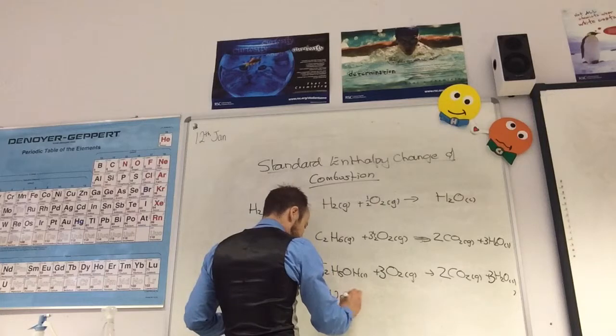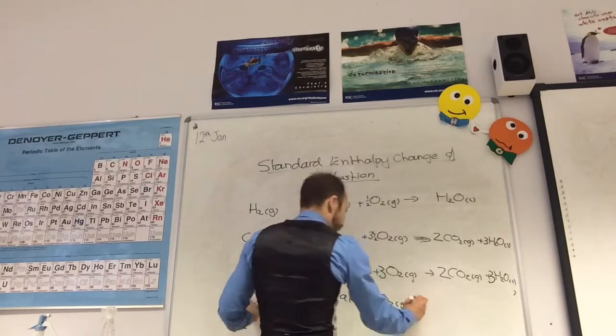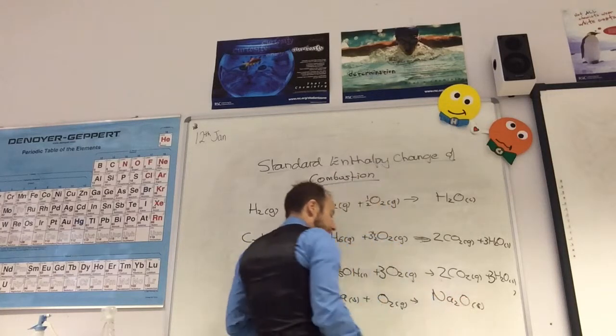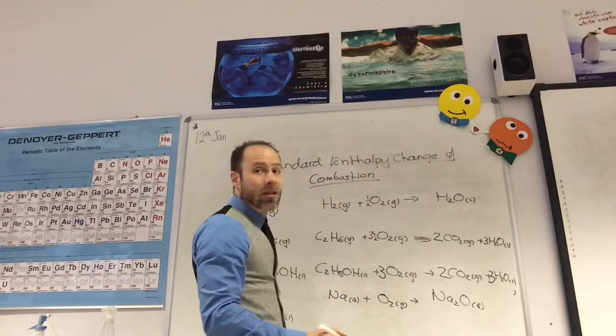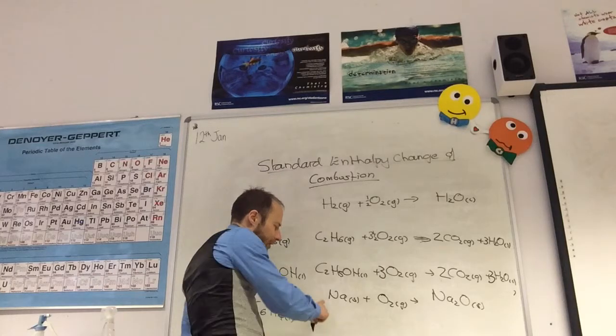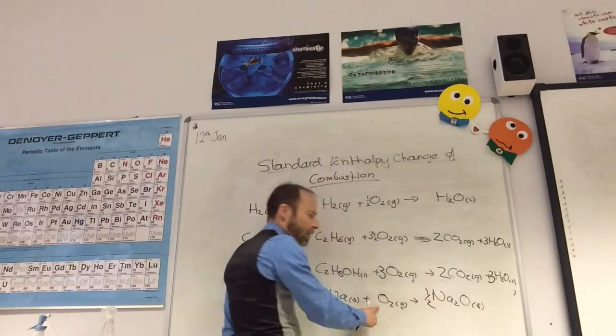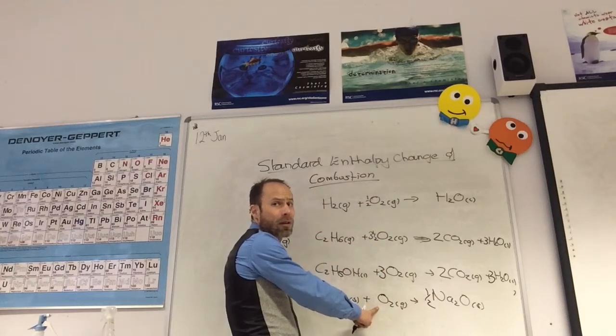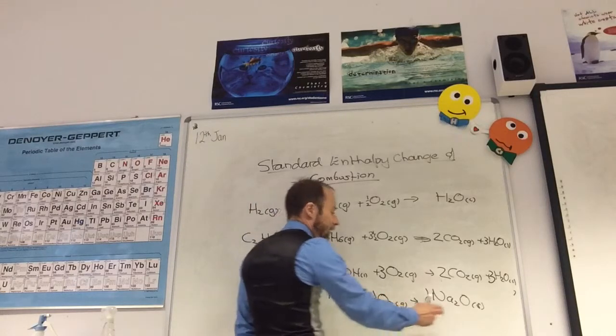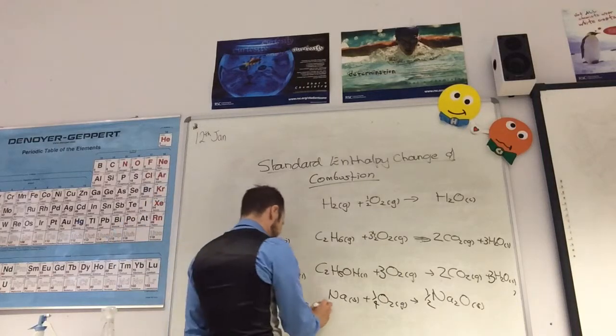Sodium, Na solid, plus O2 gas, is going to give you Na2O solid. How can I get that to balance? I'm not allowed to change that number, so how many? A half. And what do I need now in front of your O2? A quarter. Brilliant, yeah, because I'm only forming a half of an oxygen.